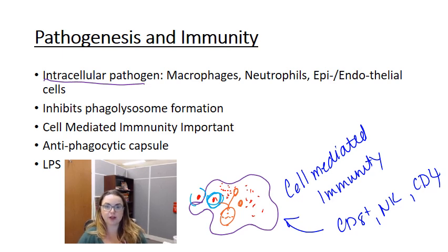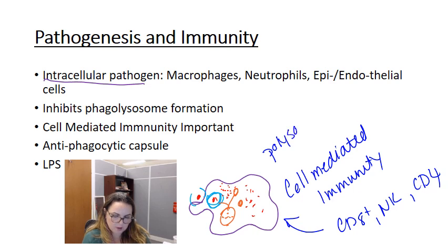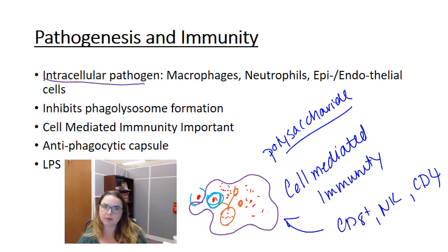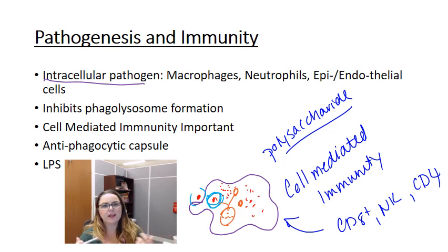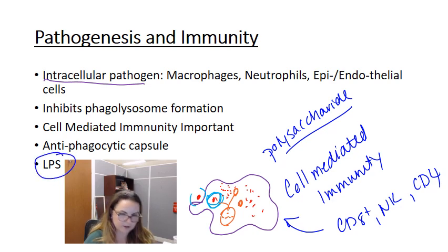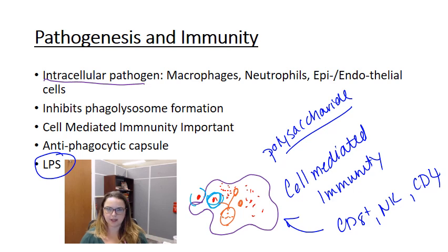Many pathogenic strains of Francisella contain an antiphagocytic capsule — a polysaccharide-rich capsule. Since it's a polysaccharide, we need either pattern recognition receptors or antibodies to recognize it, because T cells won't respond to it. The capsule makes it difficult for a phagocyte to engulf it in the first place and actually inhibits phagocytosis. This capsule also inhibits complement-mediated killing during the bacteremia phase of disease. Like other gram-negative organisms, there is endotoxin or LPS in the cell wall, which isn't a major pathogenic factor but is still problematic.